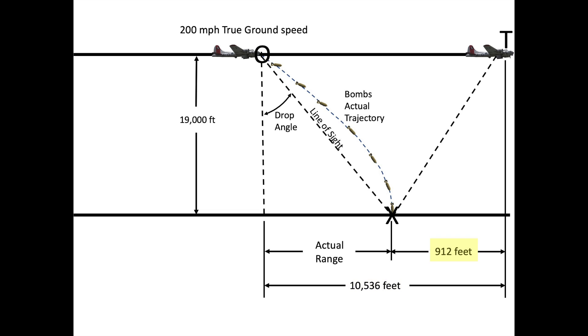The bomb tables provided the trail as 912 feet. The actual range equates to the whole range minus the trail, or 9,624 feet. The bomb's drop angle was defined from the bombing tables as 26.9 degrees.